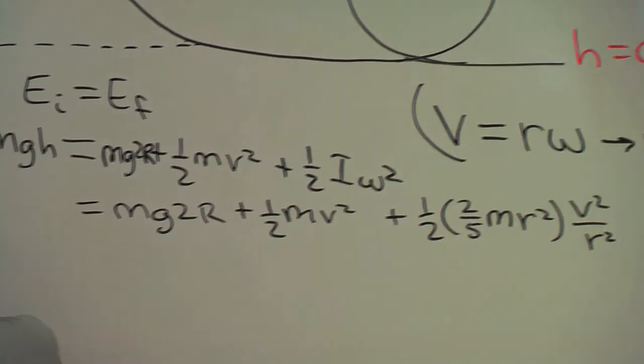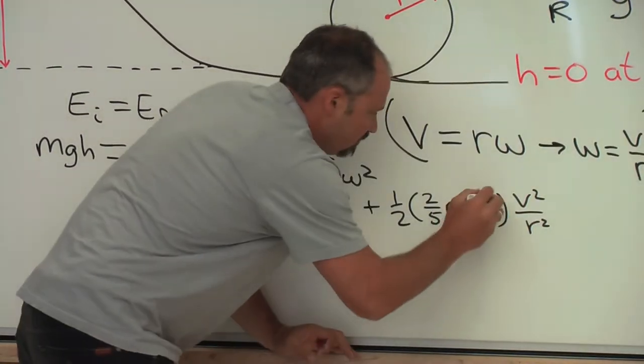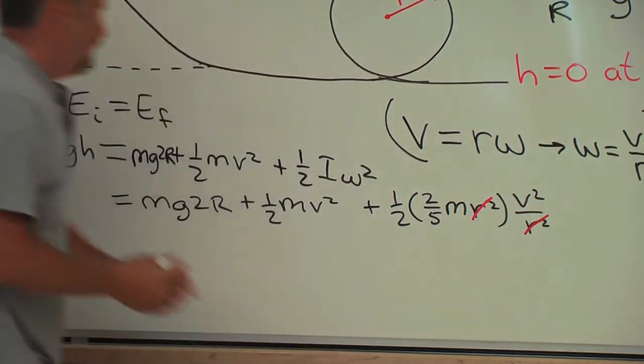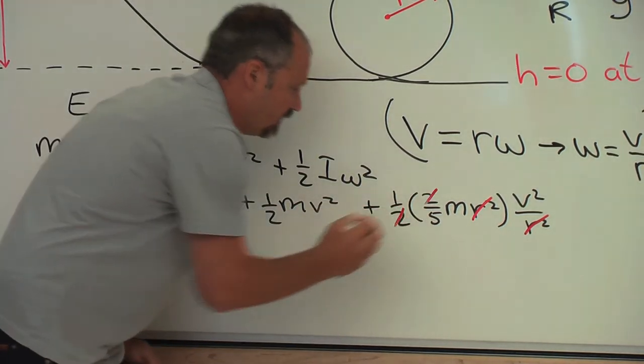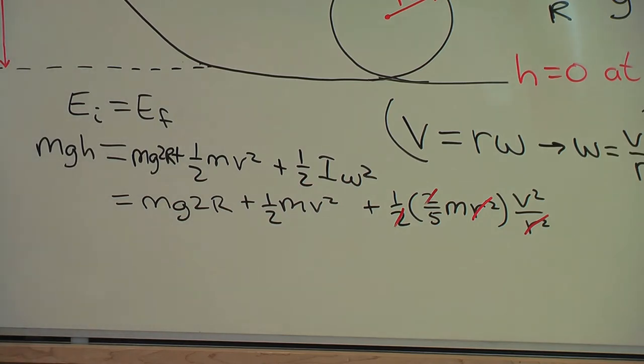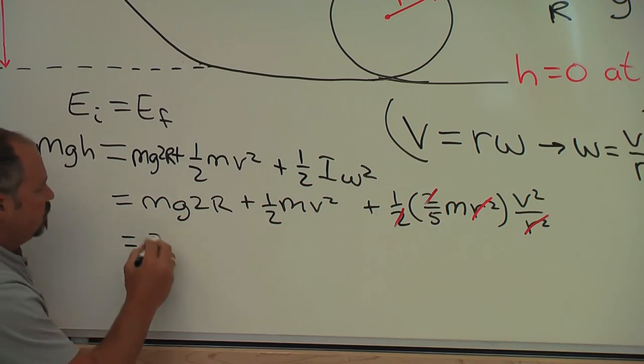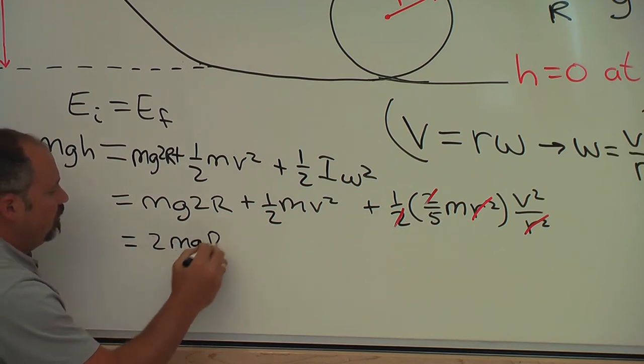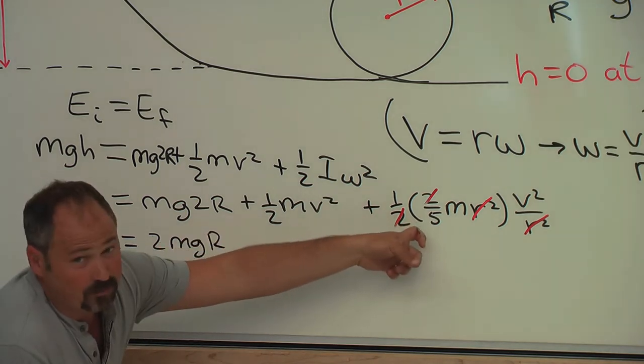And now, we can do some cancellation here. So, these guys cancel, and if I multiply ½ times ⅖, the twos cancel. Let's reduce some terms, so this is 2mgR here.